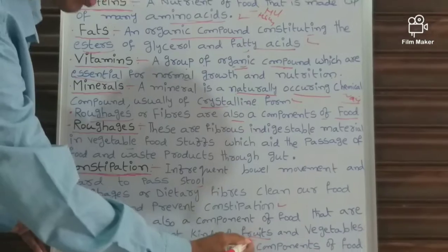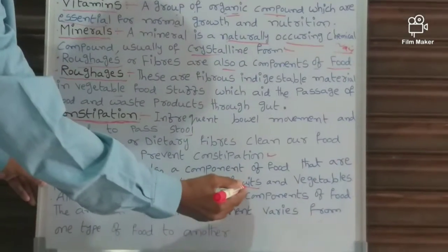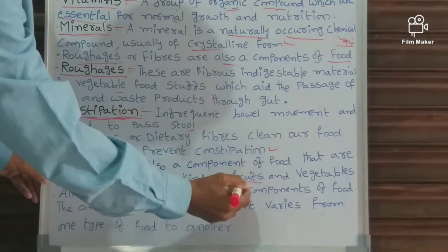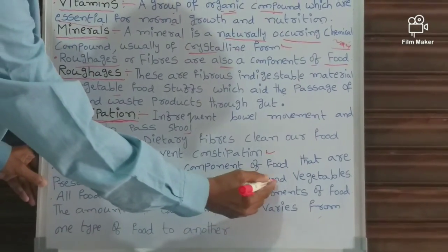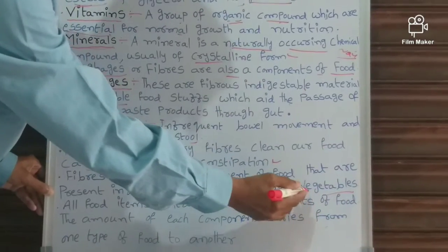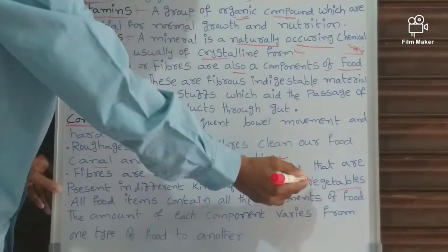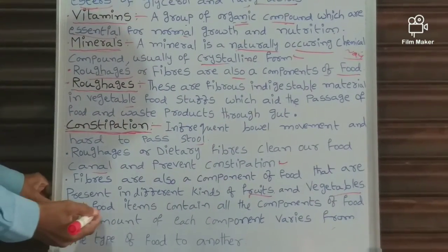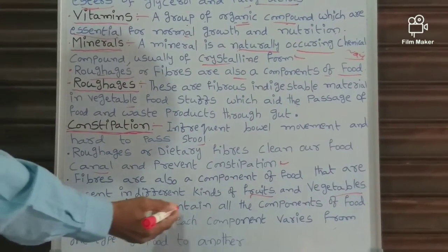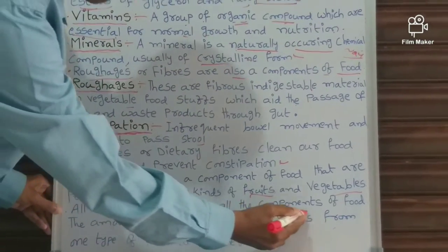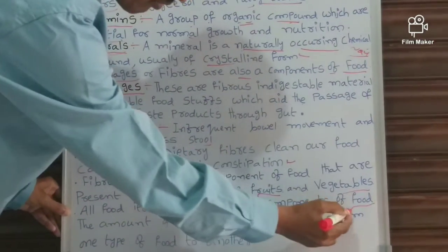Different kinds of fruits — all fruits such as apples, bananas, oranges — and vegetables also contain fiber. All food items contain all the components of food in daily life.